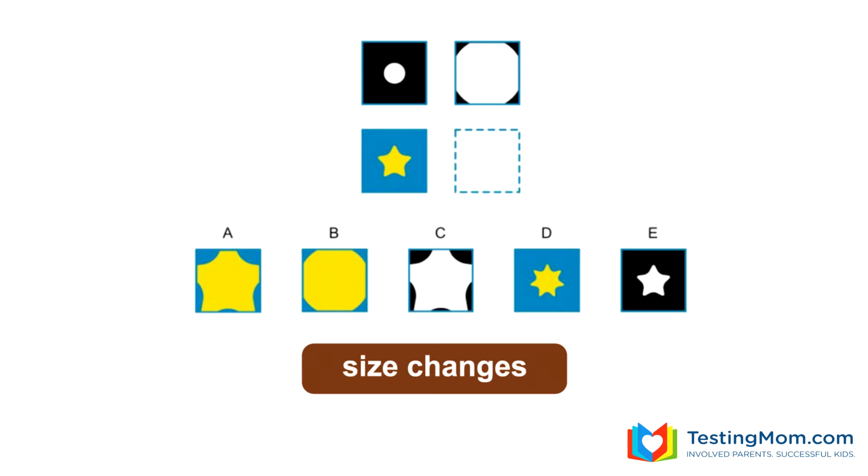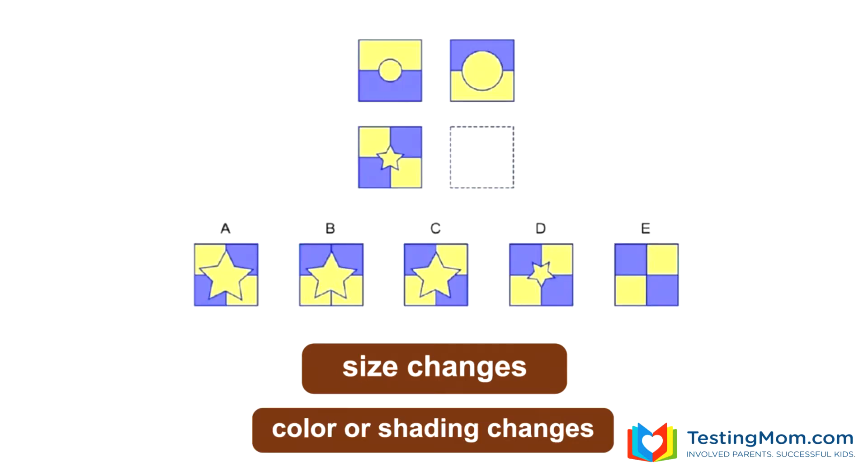For younger students, only one thing is going to happen in the analogy. Here the size of the shape changed. That's all that happened. As students get older, they'll see analogies where more than one thing happens.